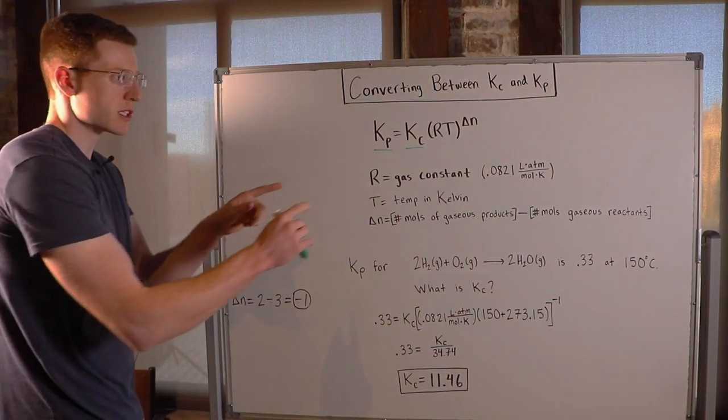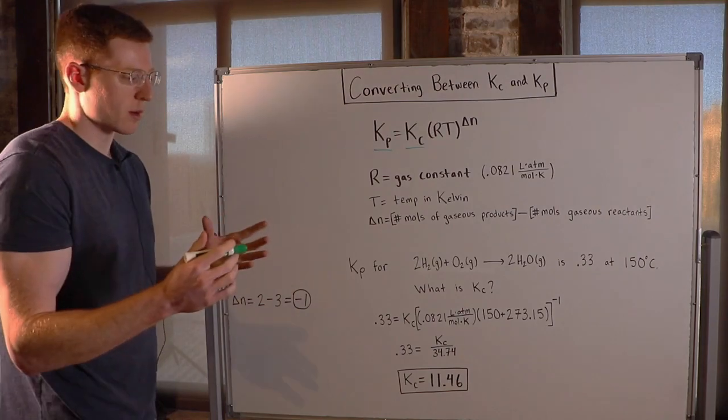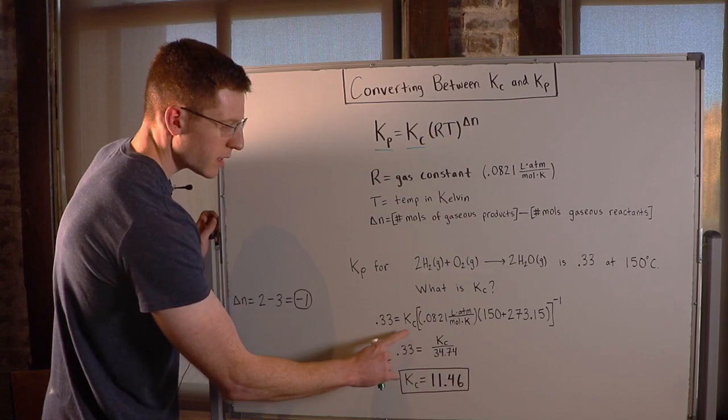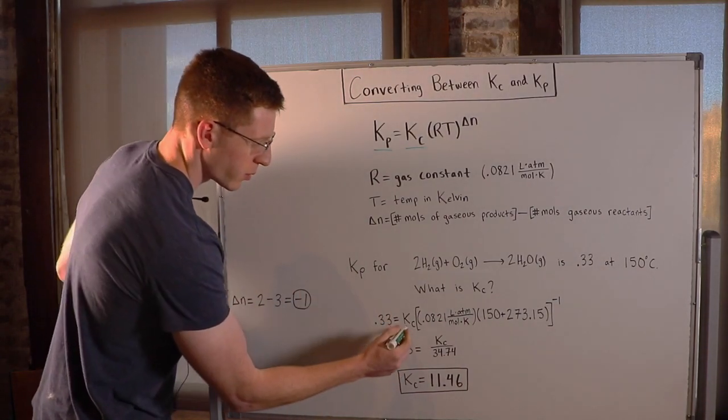So of course, we just have to set up our equation and plug in our variables. So I plugged in 0.33 for our Kp equals Kc, because that's what we're solving for. I left that as a variable times 0.0821 for our gas constant times the temperature.